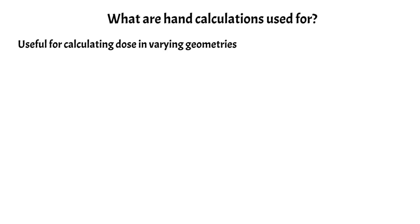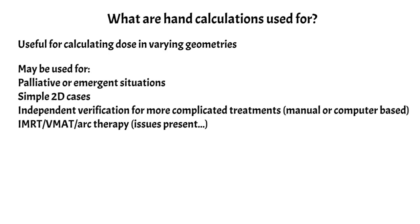As we've seen in some of our examples, hand calcs are useful for calculating the dose in a variety of different geometries. They can also be used in a palliative or emergent setting, for simple 2D cases with a single field or simple anterior-posterior geometry, and for independent verification of a more complicated treatment calculated by a computer system. This can be performed by a physicist manually or by a computer-based system. It can also be used with intensity modulated treatments, VMAT and arc therapy.